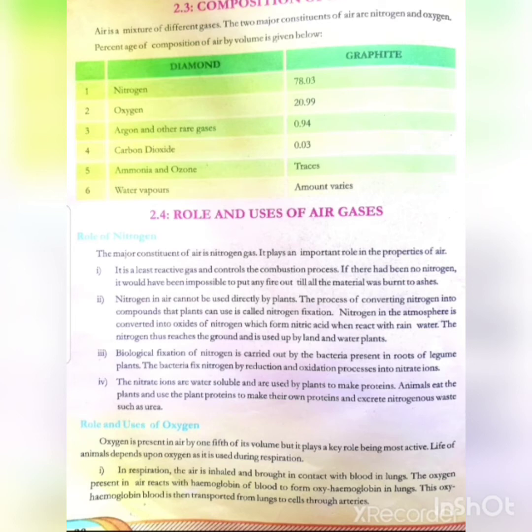Plants cannot use atmospheric nitrogen directly. So what happens? The atmospheric nitrogen reacts with rain water and creates nitric acid. When it falls with rain water and reaches the ground, this process is called atmospheric nitrogen fixation.